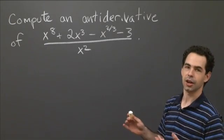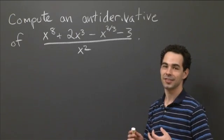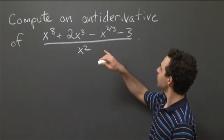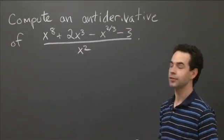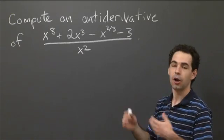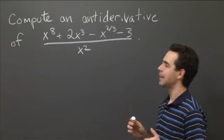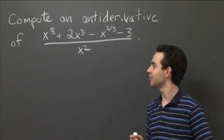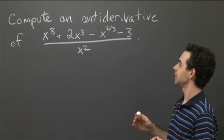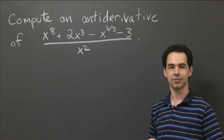So just a quick linguistic note about why I said an antiderivative instead of the antiderivative. An antiderivative—there are many functions whose derivative is this function. They all differ from each other by constants. So I would be happy with any one as an answer to this question. I'm looking for a function whose derivative is equal to this function.